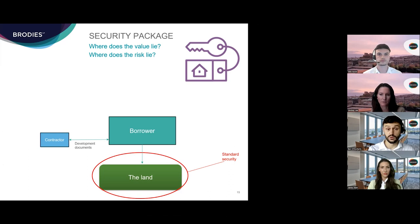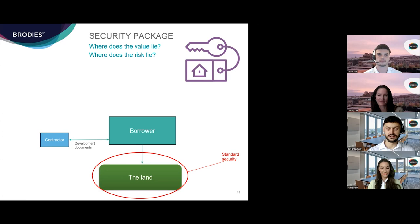Standard securities are a creature of statute, having been introduced by the Conveyancing and Feudal Reform (Scotland) Act 1970. The 1970 Act sets out the prescribed form of standard security and certain standard conditions which are automatically incorporated by statute — including that the borrower must insure the property to its market value and cannot lease or alter the subjects without the lender's consent. Most of these conditions can however be varied, so in the development finance context the borrower's counsel will look to ensure the terms allow the development to be carried out and that the insurance obligations are appropriate.